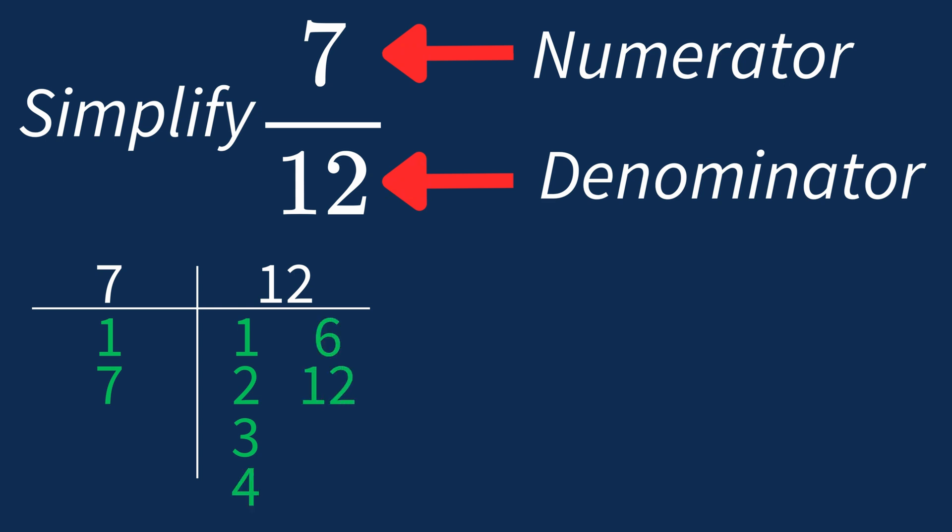So in this case, the largest common factor is 1. This means we'll divide both the numerator and denominator by 1 to see if anything changes.